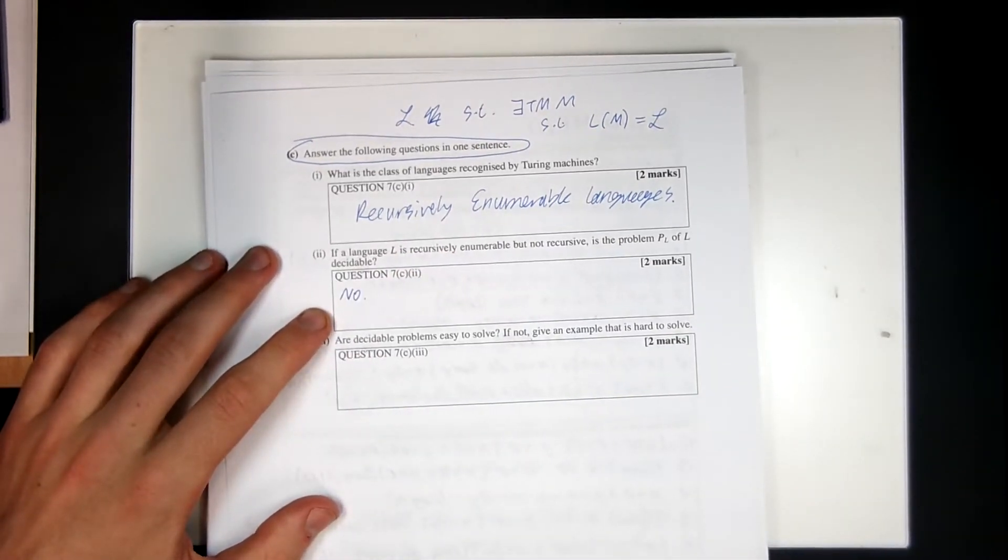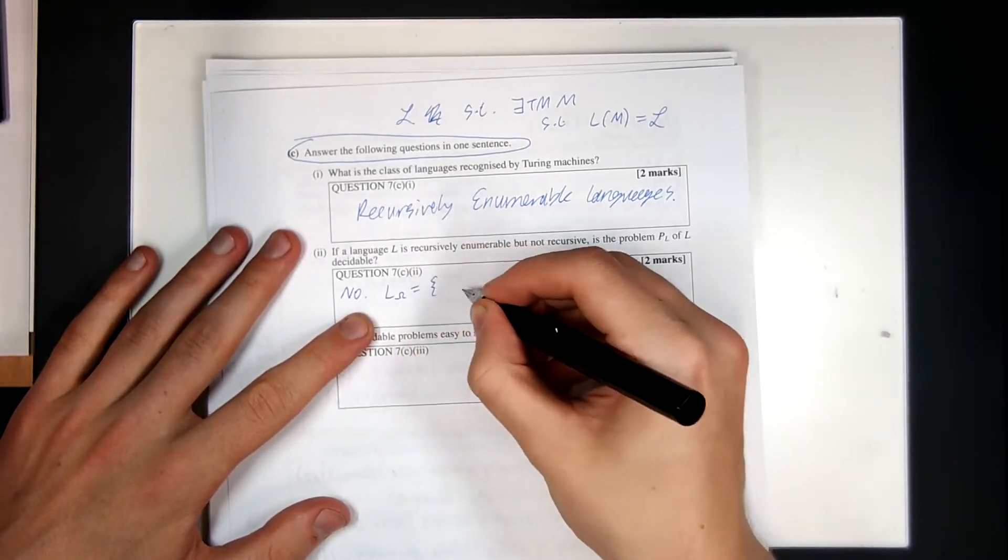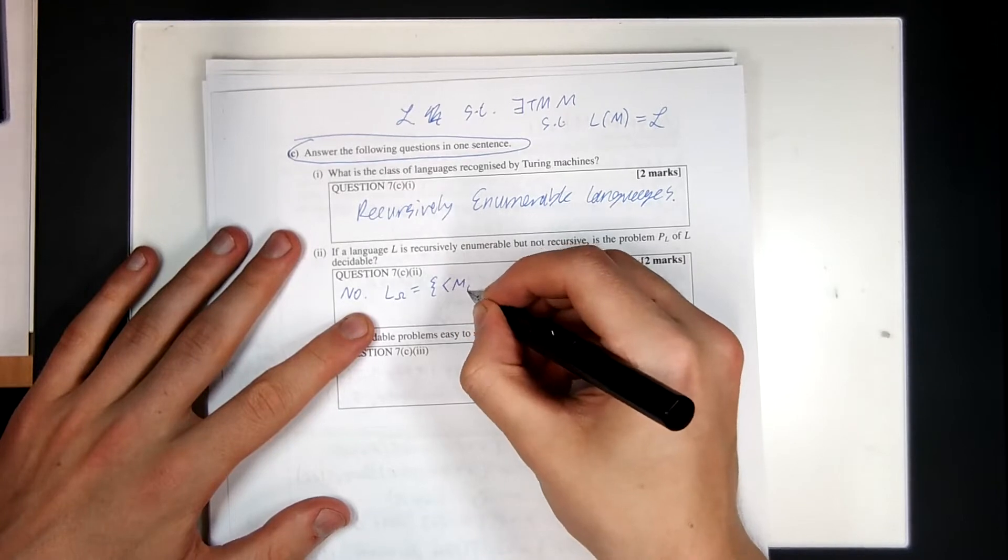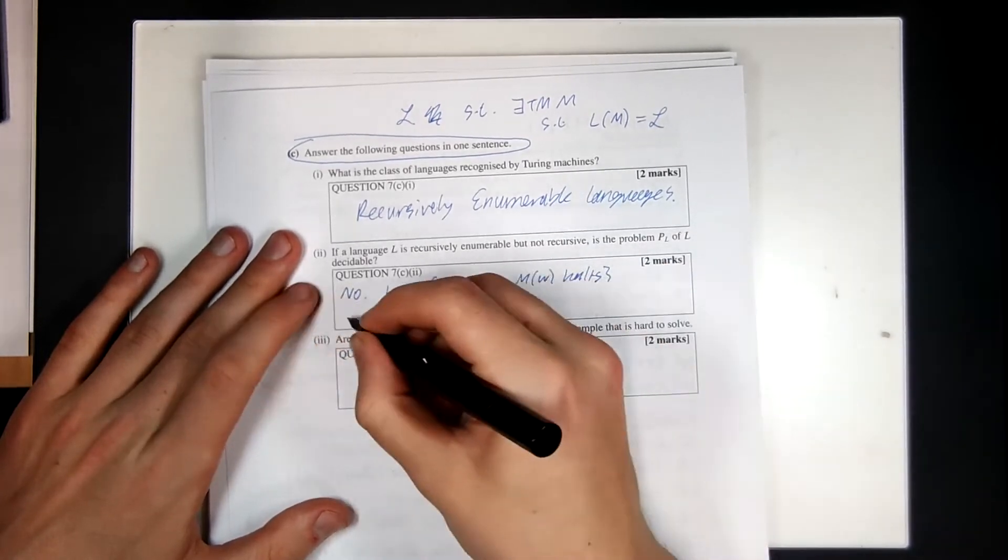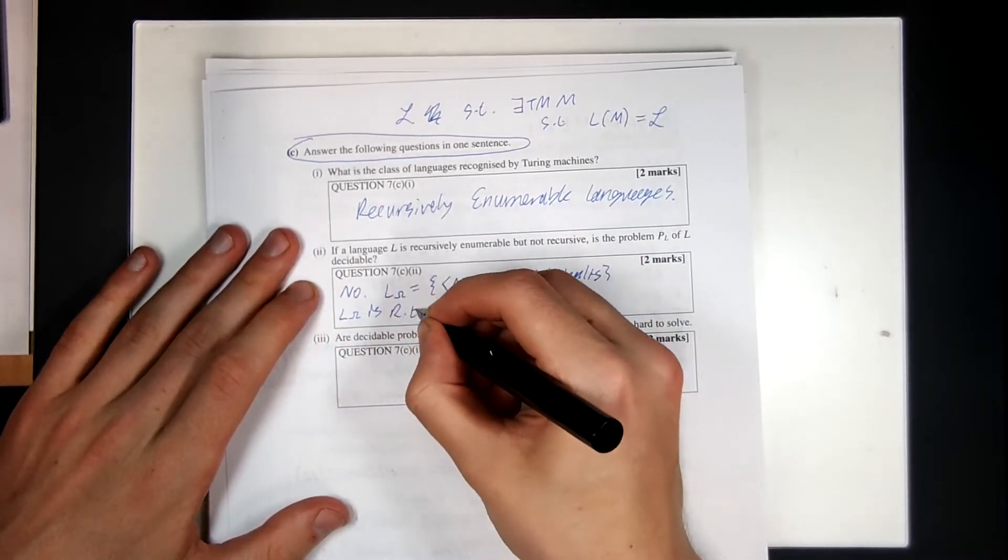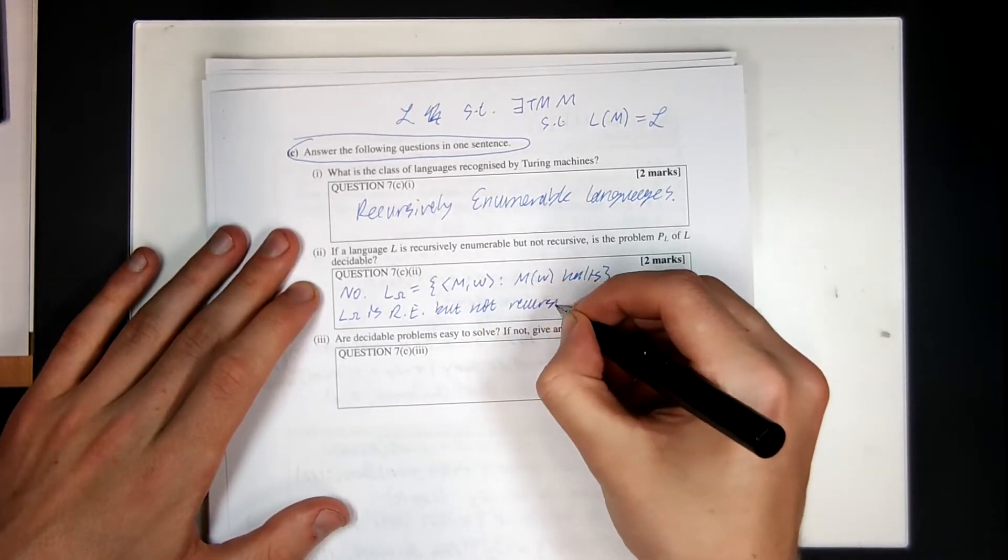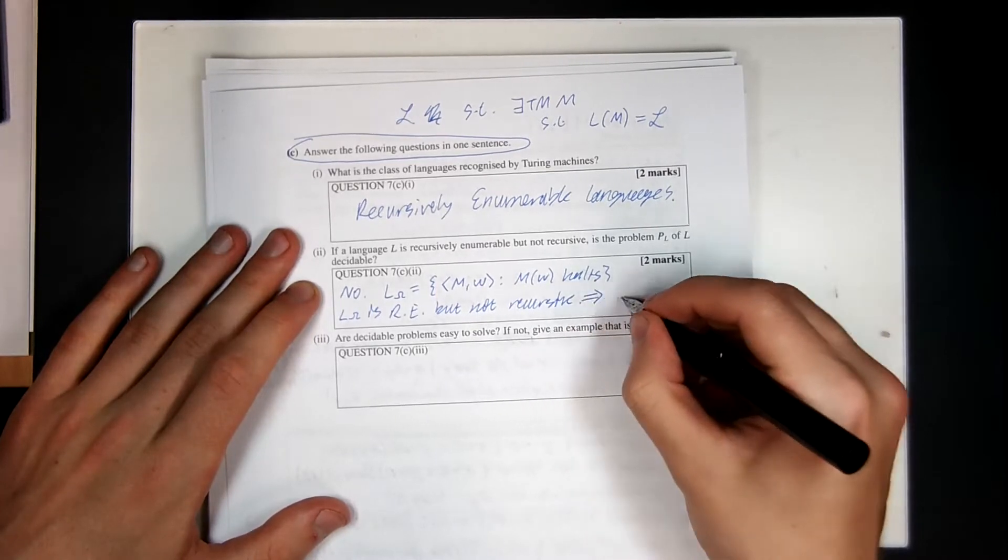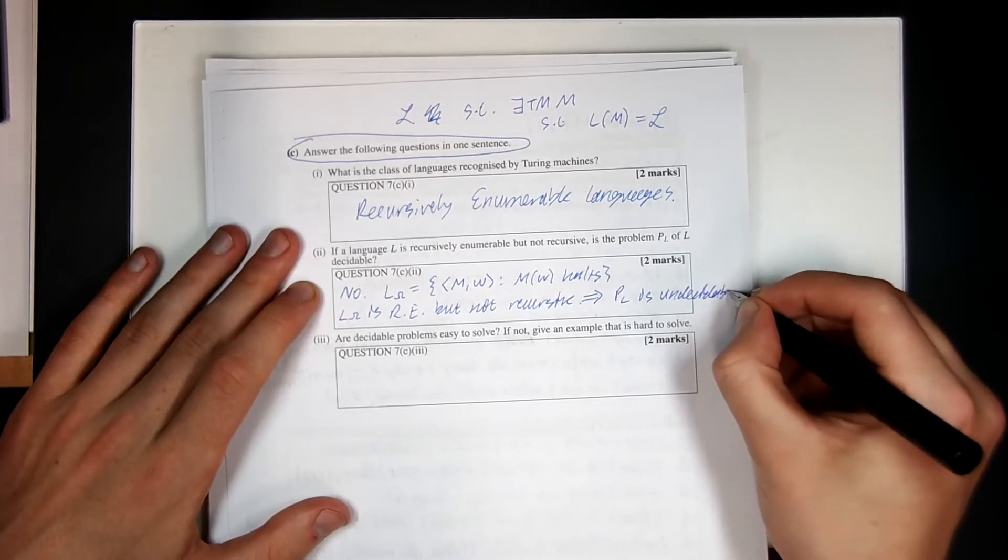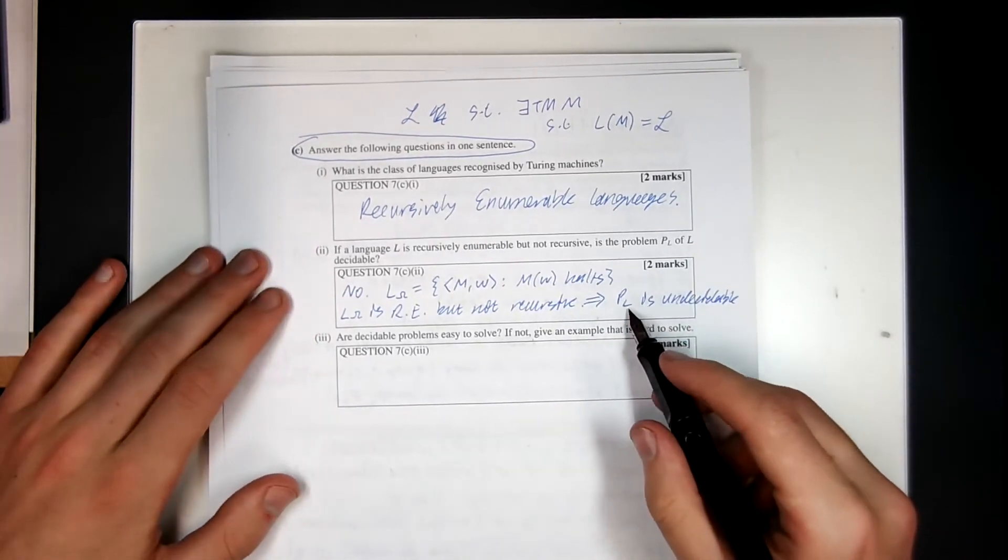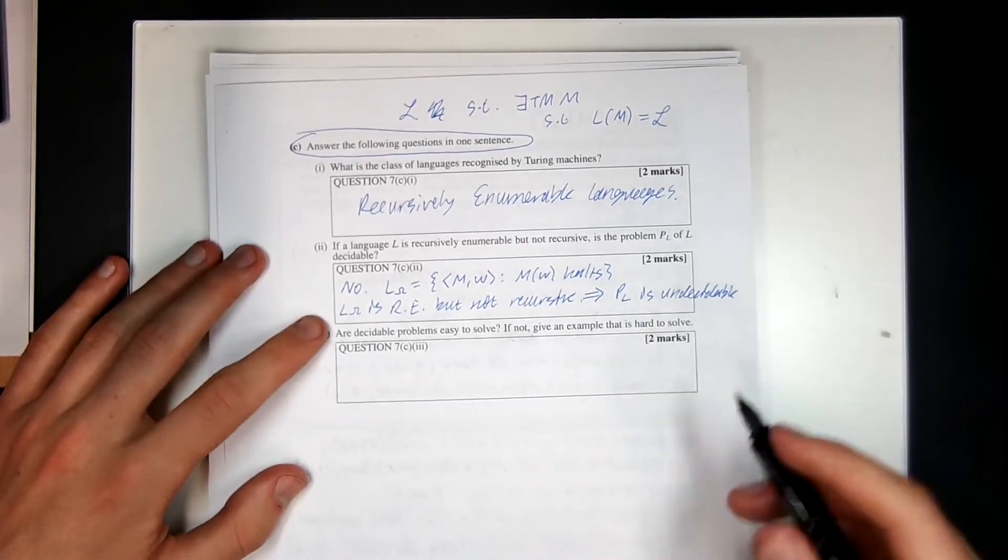I guess I should write more than that. No. Why? Consider the language L omega, which is the set of all machines and strings such as M of W halts. L omega is recursively enumerable, but not recursive, which implies PL is undecidable. Because decidable would mean the problem of checking set membership is decidable if and only if the set is recursive. That, to me, looks like sufficient justification.